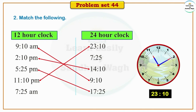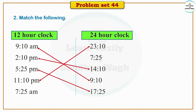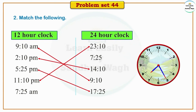Next is 7.25 AM. AM means morning — time before 12 noon. In the 24-hour clock, morning times remain the same as 12-hour times. So 7.25 AM in the 24-hour clock is also 7.25. Match: 7.25 AM = 7.25.